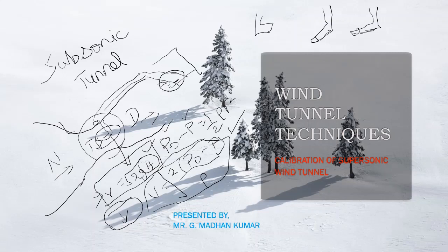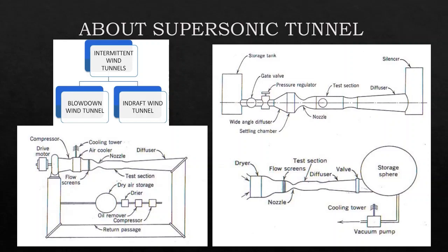Next, we discuss supersonic tunnels and their types and classification. Initially, a supersonic tunnel is said to be an intermittent tunnel — intermittent meaning short duration. It operates in short duration, with a maximum operating time of five to ten seconds.